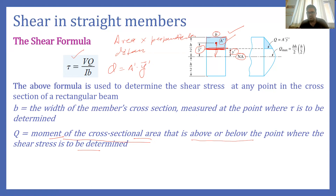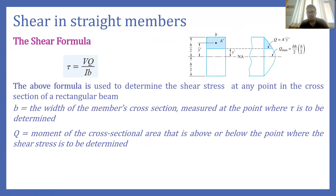If we want to find shear stress at the lowermost fiber, the area below that line is zero, so Q is zero and shear stress is zero. Similarly, at the topmost fiber the area above is zero, so shear stress is zero there too. The shear stress variation across the section is parabolic, with zero at the top and bottom and maximum at the neutral axis.